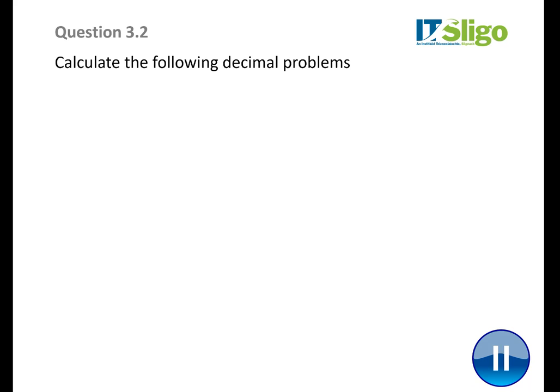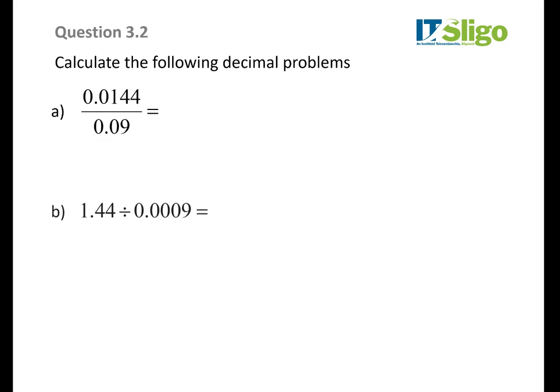Now we have another few decimal problems. Pause the video, sit down, and have a go at these. You'll see it's the same pair of numbers — 144 and 9 — in various formats. I'm interested in whether you understand the technique; you'll get three different answers but the answers will all have the same numbers in them. Make sure you record your calculations because if you think one of your CA test answers is wrong, email me with a picture of your maths and if it's justified I'm happy to change your result.